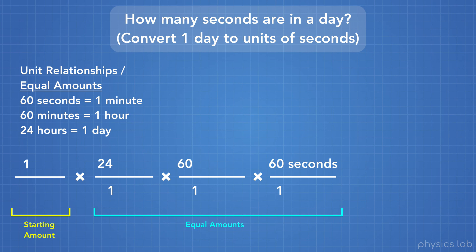In our case, on the top, we multiply 1 times 24 times 60 times 60 seconds, and we get 86,400 seconds. And on the bottom, we multiply 1 by 1 by 1, and we get 1.